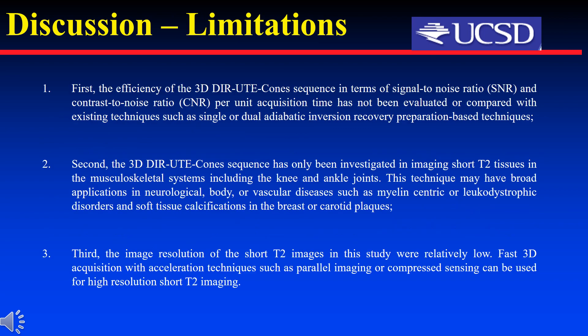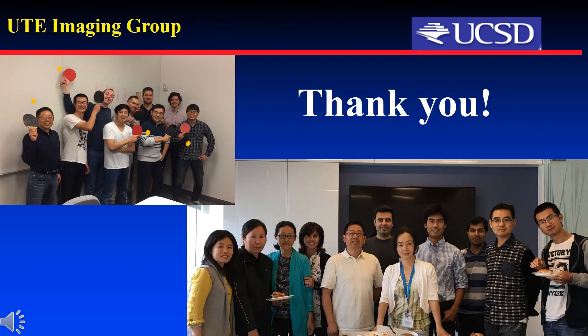There are still some limitations in this study. First, the efficiency of the 3D DIR-UTE-CONES sequence in terms of SNR and CNR per unit acquisition time has not been evaluated and compared with existing techniques such as the single IR-UTE technique. Second, the 3D DIR-UTE-CONES sequence has only been investigated in imaging short T2 tissues in the musculoskeletal system. Third, the image resolution of the short T2 images in this study was relatively low. Fast 3D acquisition with acceleration techniques such as parallel imaging or compressed sensing can be used for high-resolution short T2 imaging. Thanks for your attention!